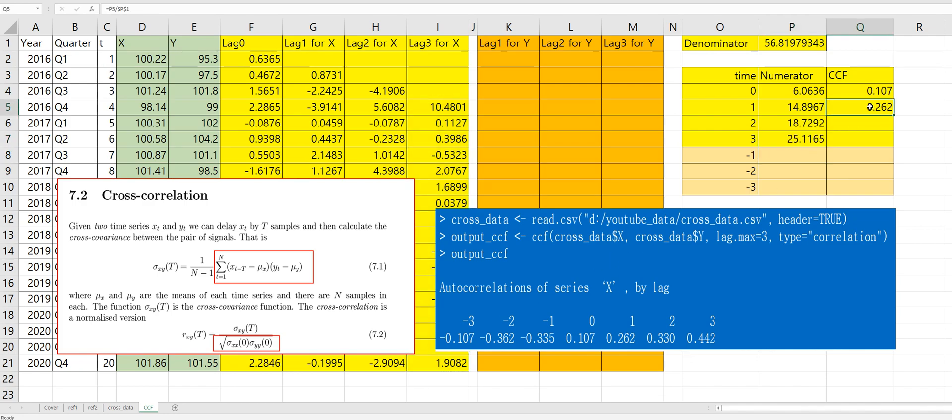If we apply this formula for this one, then we can get same cross correlation. So actually, this CCF shows that this one third lag has highest correlation among them.